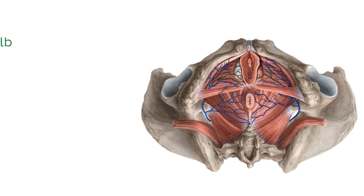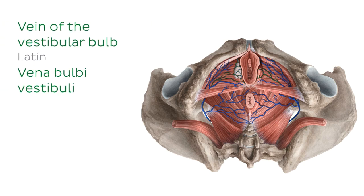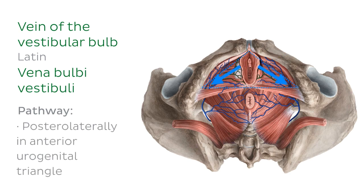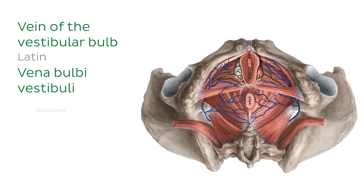The vein of the vestibular bulb drains the vestibular bulb, which you can see in this image beneath the bulbospongiosus muscle, as well as the erectile tissue of the vagina. Like the deep vein of the clitoris, the vein of the vestibular bulb courses posterolaterally in the anterior urogenital triangle before draining into the internal pudendal vein.